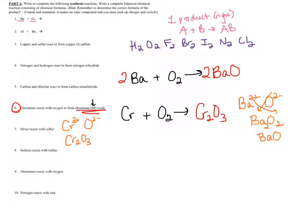Now I balance Cr + O₂ → Cr₂O₃. There are two O's on the left and three on the right — they don't divide into each other, so I find the least common multiple: six oxygens on each side. I put a 3 in front of O₂ to get six oxygens, and a 2 in front of Cr₂O₃ to get six oxygens on the right. That gives four chromiums on the right, so I put a 4 in front of Cr.